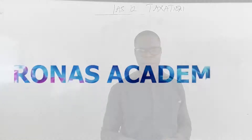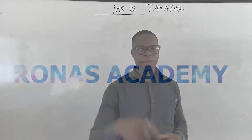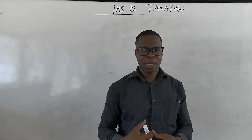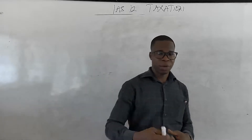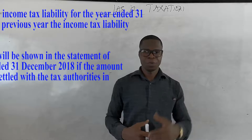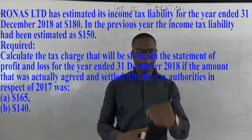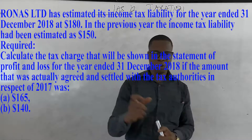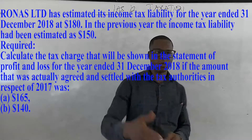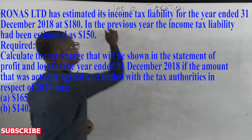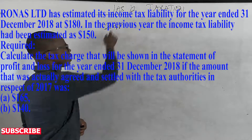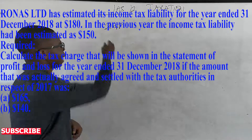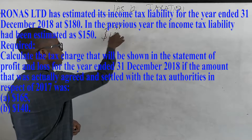Welcome to Ronas Academy. Let's first look at the question under current tax. From the question on screen, we were told that the estimated income tax liability for the period of 2018 is $180. So in 2018, they estimated that their income tax liability is going to be $180.